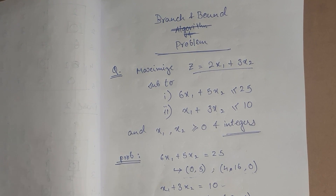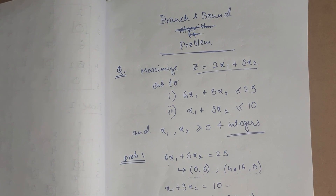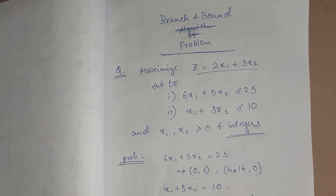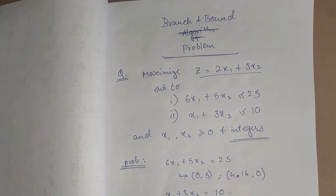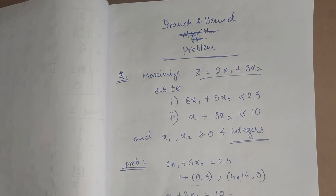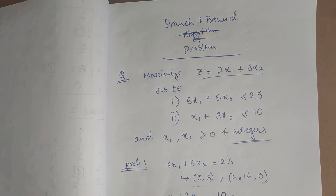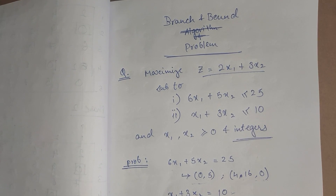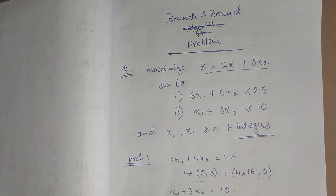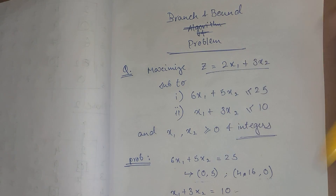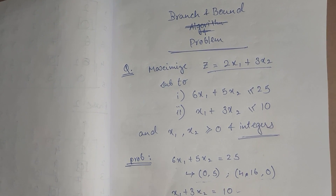This video is about the branch and bound problem. In a linear programming problem, the optimal solution can be in decimal form, but in an integer programming problem the answer should be a whole number. To convert a non-integer optimal point to a whole number, we use the branch and bound concept.